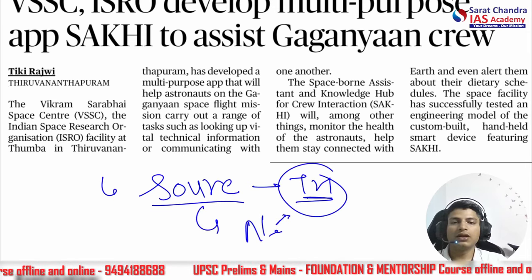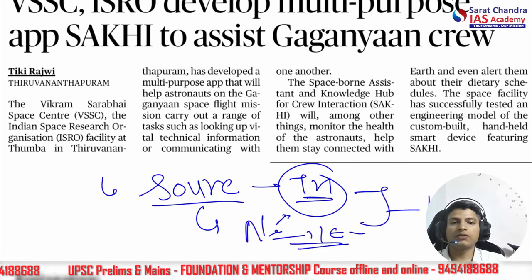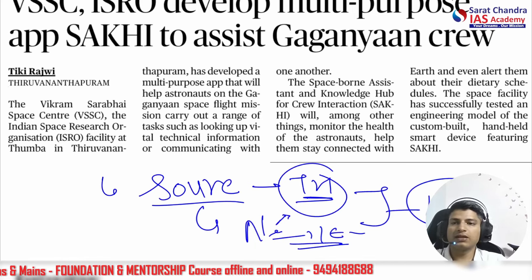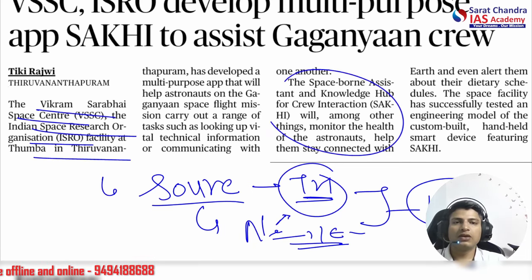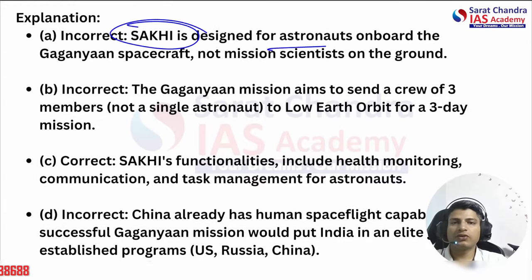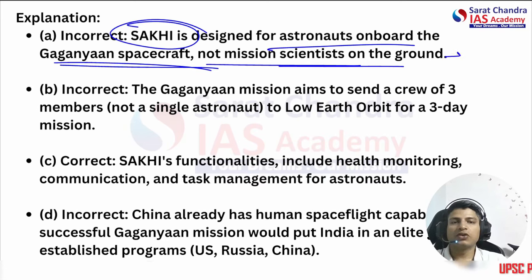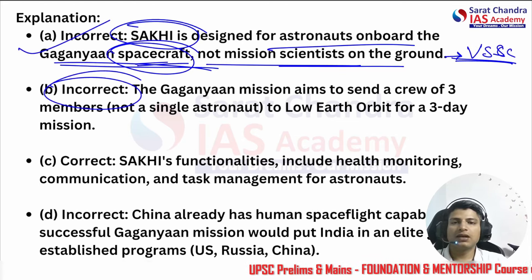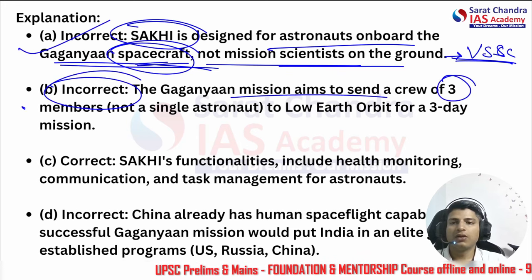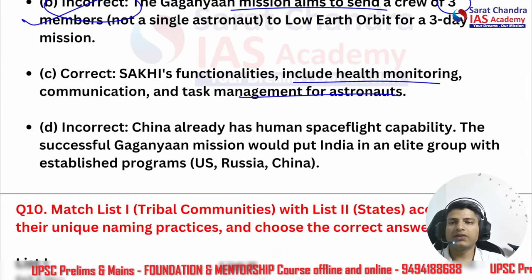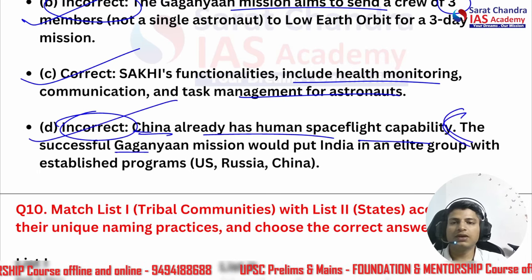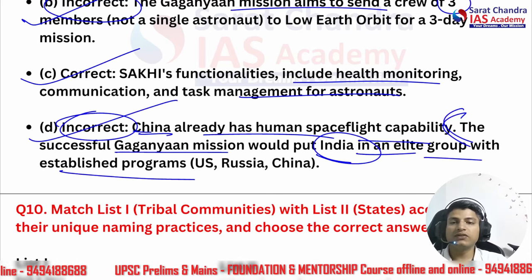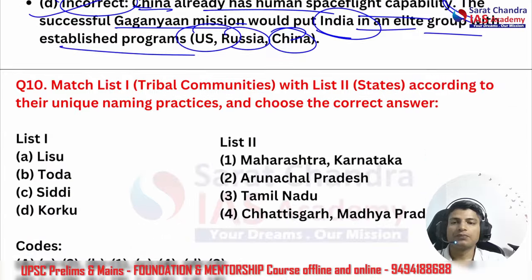The source is again The Hindu. Read the newspaper very carefully — in the exam you will realize you had read that news but cannot answer the question, so read carefully or skip it. SAKHI is designed for astronauts on board the Gaganyaan spacecraft, not mission scientists on the ground — so statement one is incorrect. Statement two is incorrect as the crew is three members. Statement three — health monitoring and task management — is correct. China already has human spaceflight capacity; the successful Gaganyaan mission would put India in an elite group with the US, Russia, and China.